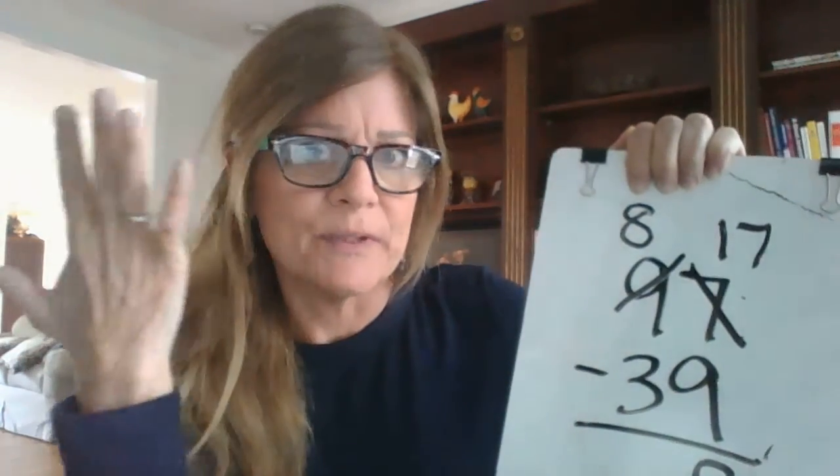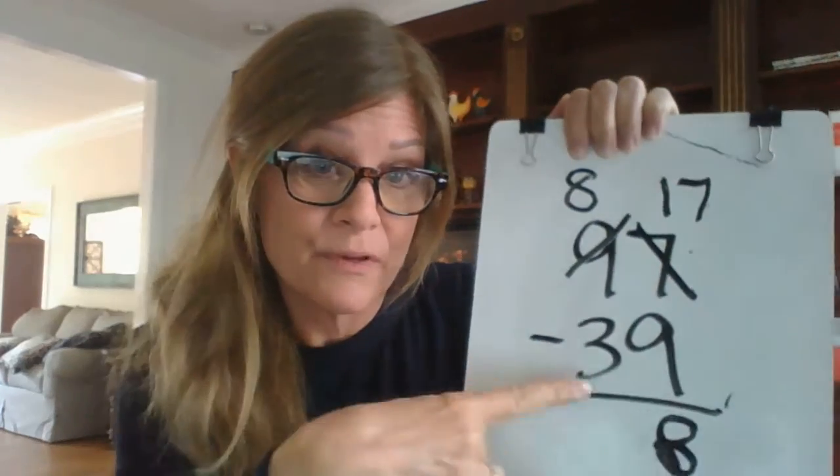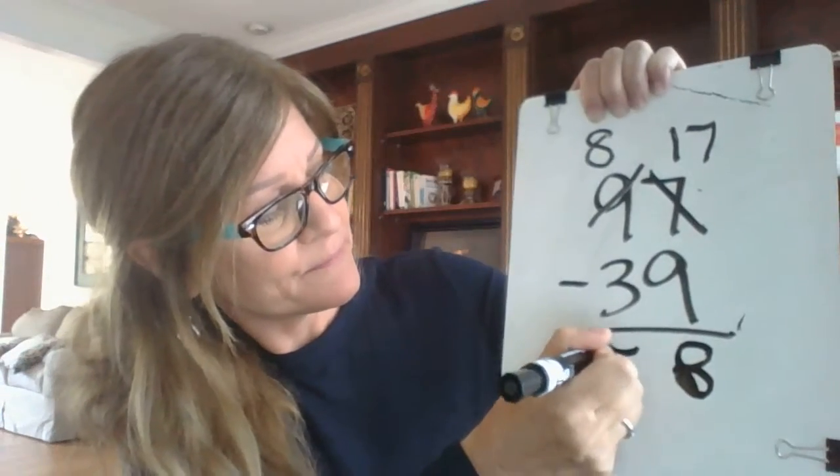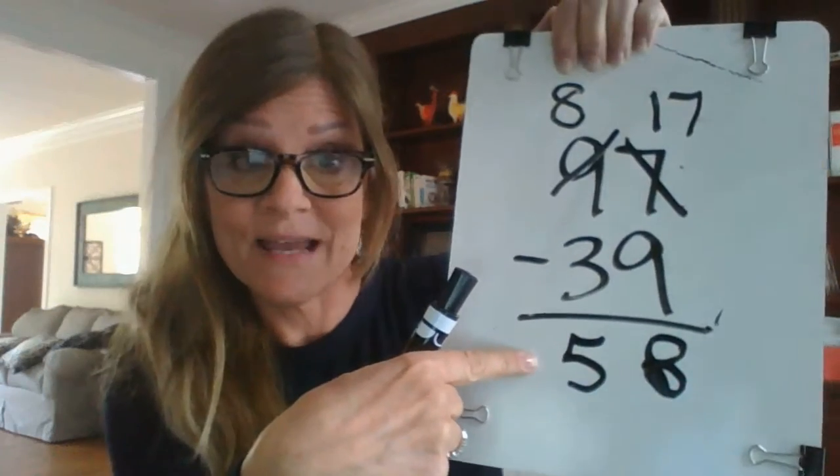Another way to do it is put eight in your head and then count backwards three. So eight, seven, six, five. Eight minus three equals five. Ninety-seven minus thirty-nine equals fifty-eight.